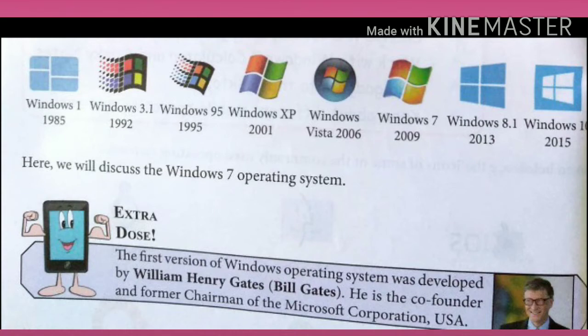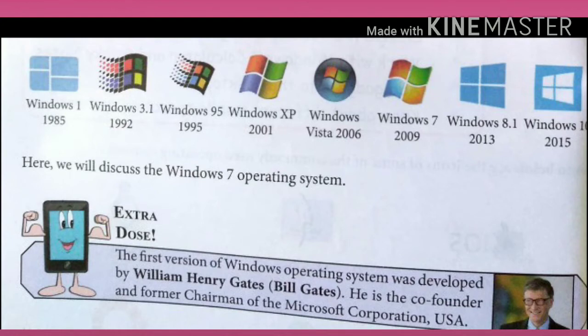The first version of Windows was Windows 1.0, which was released in 1985. Later, many versions were released such as Windows 3.1, Windows 95, Windows XP, Windows Vista, Windows 7, Windows 8, Windows 8.1, and Windows 10 being the latest.